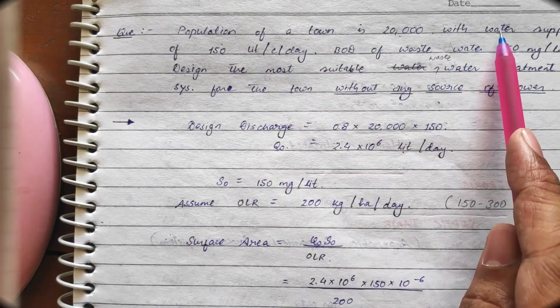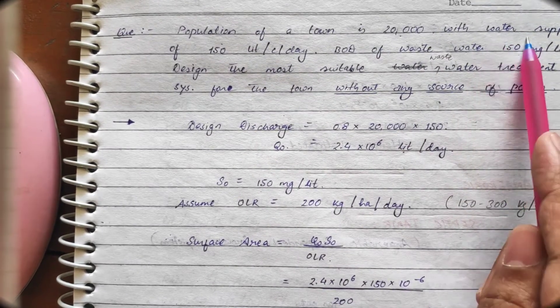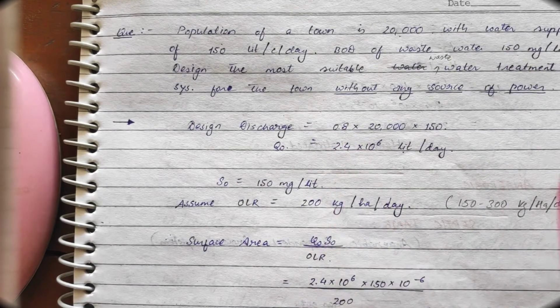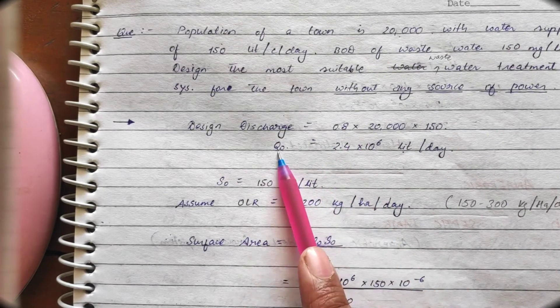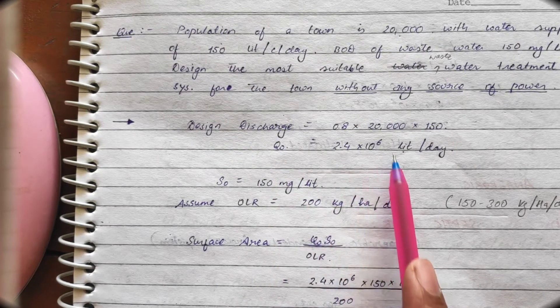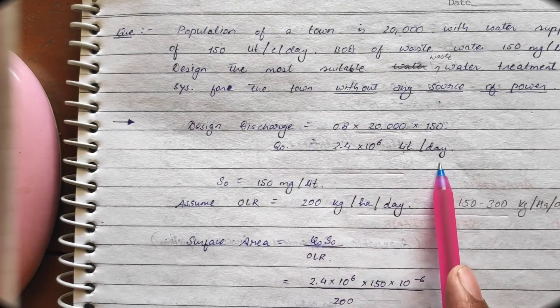When this is, if it is given it is a wastewater supply then we don't have to multiply this factor of 0.8. So, from this we can calculate the design discharge that is the Q0 that is 2.4 into 10 raised to power 6 liters per day.